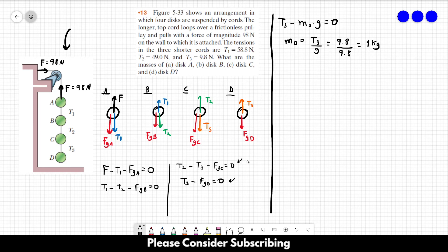So let's go to this equation now. We have that T2 minus T3 equals MC times gravity. So MC equals T2 minus T3 over G. And this is 49 minus 9.8 divided by 9.8, and this gives us 4 kilograms.